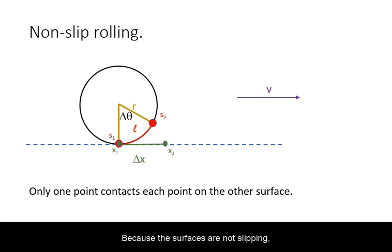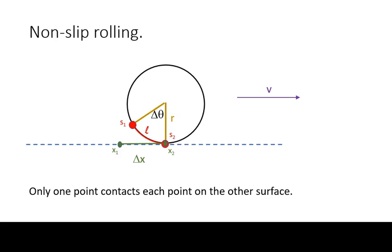Because the surfaces are not slipping at the contact point relative to each other, there will be a one-to-one match between arc position along the rolling object and linear position along the level ground. The arc length will equal exactly the linear displacement.